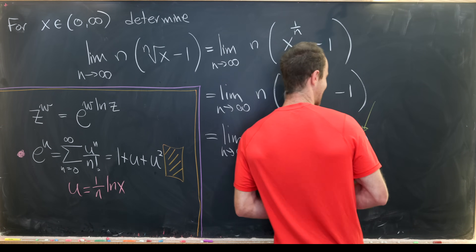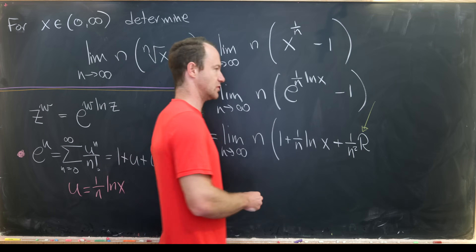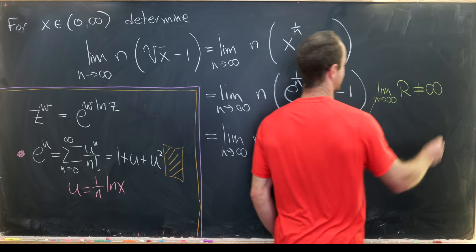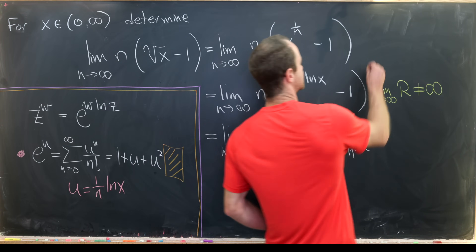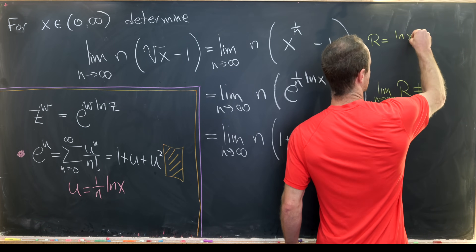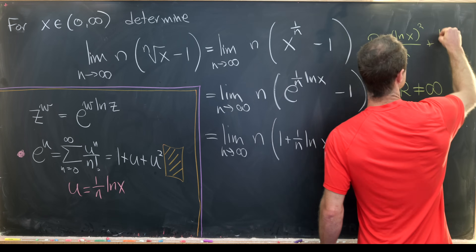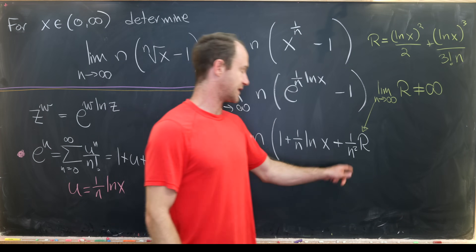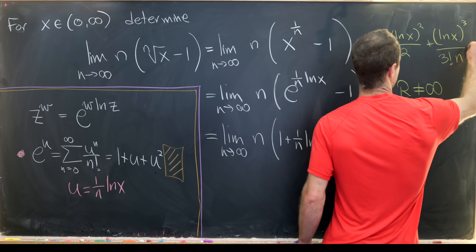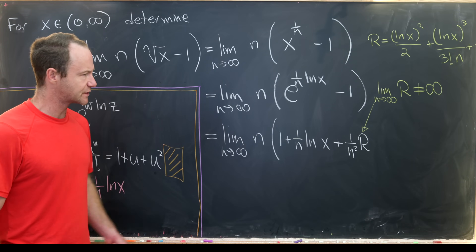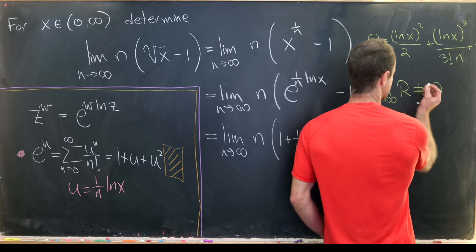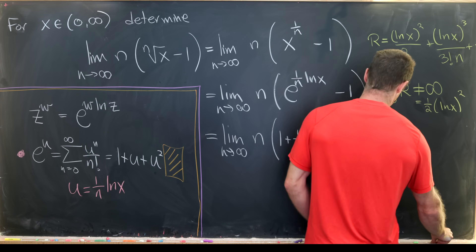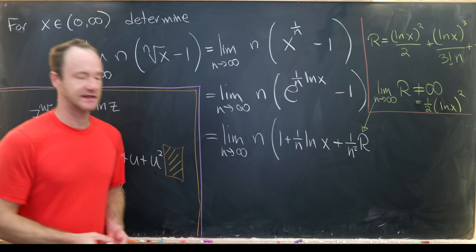The important thing about this remainder is that its limit is not infinity as n approaches infinity. We can actually calculate it: the remainder looks like (ln x)² over 2 plus (ln x)³ over 3 factorial times n, and so on. Because the n² was pulled out, this limit is exactly (1/2) times the natural log of x squared. The key point is simply that it is not infinity.